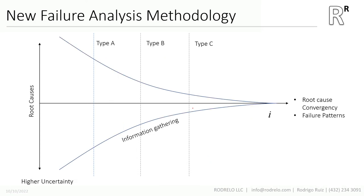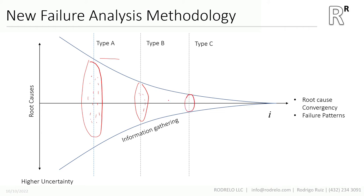There's a way to connect these three aspects of failure analysis into a convergence — a unified method. This method can be described as a funnel: starting with a failure sample and limited information, you identify probable root causes, gather additional information, narrow down those root causes, and continue converging. The other way to approach the funnel is by defining patterns across your failure analysis.